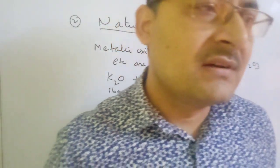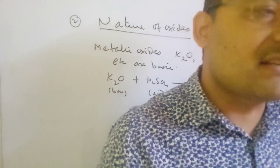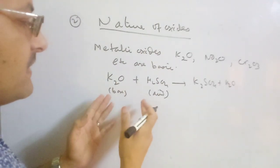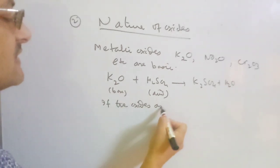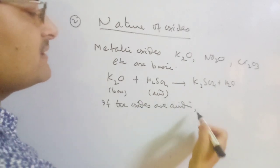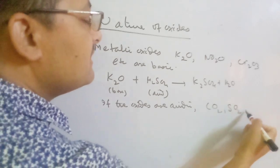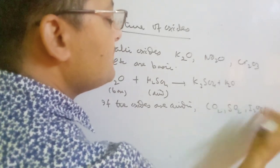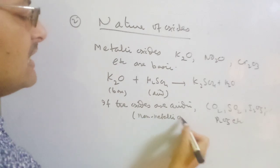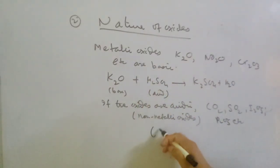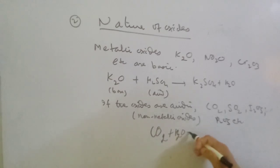You must know that if the partial product oxides are basic or acidic, what kind of reaction they show. If metallic oxide is there, it reacts with acid and gives salt and water. If the oxides are acidic — like CO₂, SO₂, iodine pentoxide, P₂O₅ — these are non-metallic oxides. Non-metallic oxides are acidic, and acidic oxides when reacted with water give their parent acid.